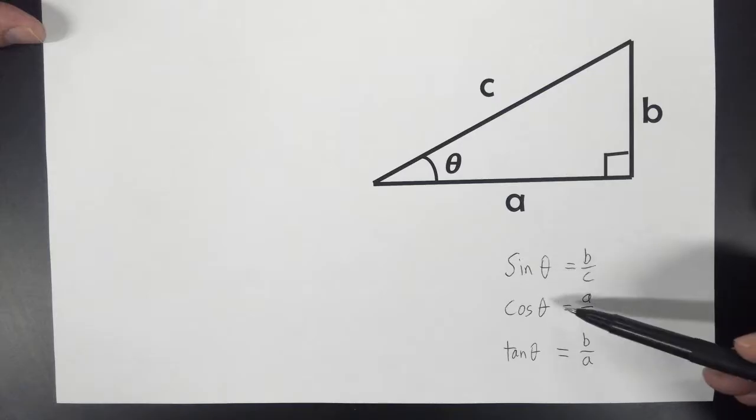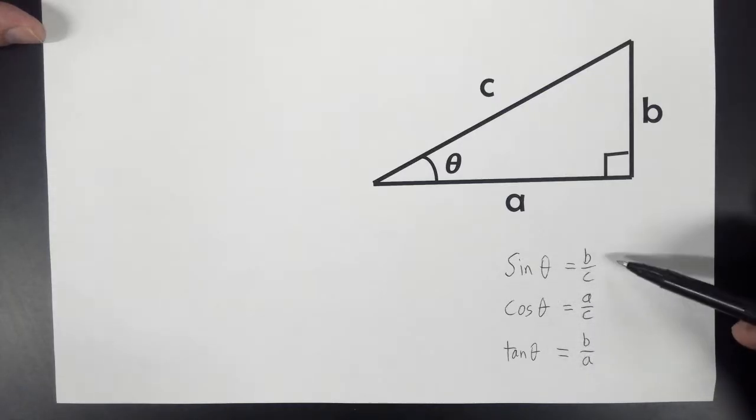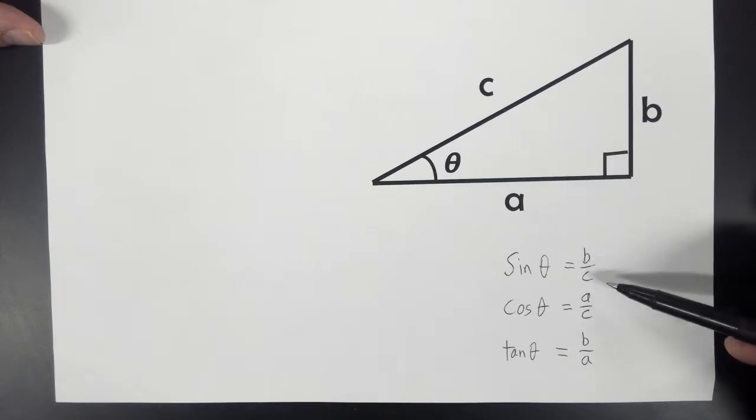All right, so basically all that sine, cosine, and tangent are are ratios. It means one number divided by another number.